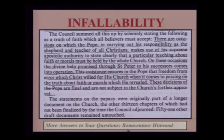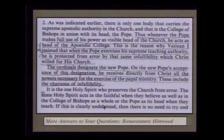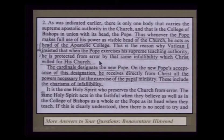Regarding infallibility: Vatican I insisted that when the pope exercises his supreme teaching authority, he is protected from error by that same infallibility which Christ willed for his church. It is interesting that they declared the Vulgate Bible infallible — yet an ex-pope had more than 1,000 corrections introduced into the Vulgate. So much for papal infallibility. Power was given to him to continue 42 months — and remember, a beast addresses the political aspect, not the ecclesiastical.